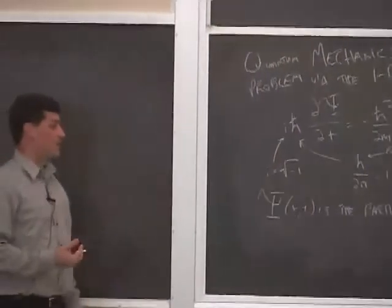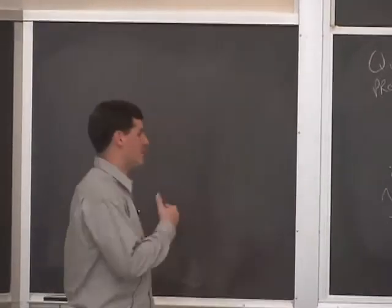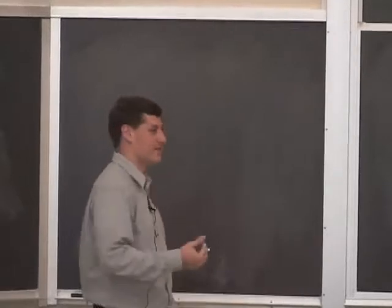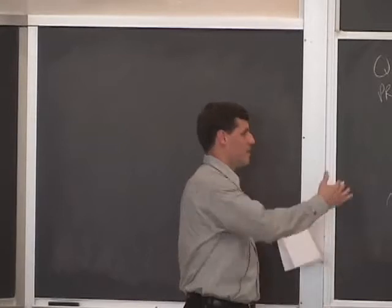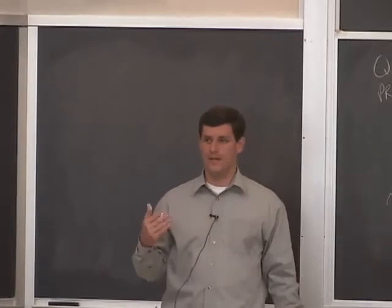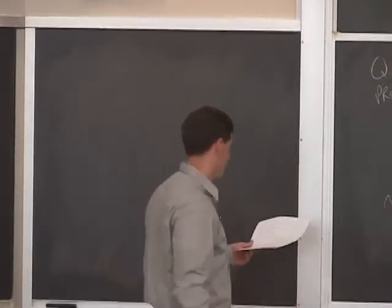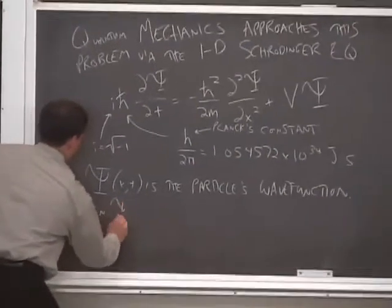If we're given an initial condition, so if we knew ψ at t equals 0, then this equation tells us what ψ will be for all future values of time. So in that sense, it's similar to classical physics. We need an initial condition. We have some equation. We can solve it to learn some properties of the particle for all future values of time.